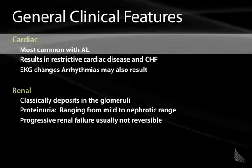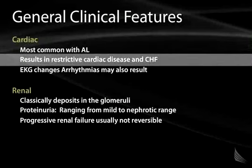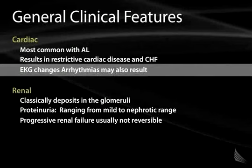Most common with the AL form of amyloidosis is deposition within the heart — the cardiac form of amyloidosis. The effect, as one might expect with deposition of an abnormal protein within a contractile organ, is a restrictive cardiomyopathy and congestive heart failure. On EKG, you can see various arrhythmias that may result from this restrictive pattern.